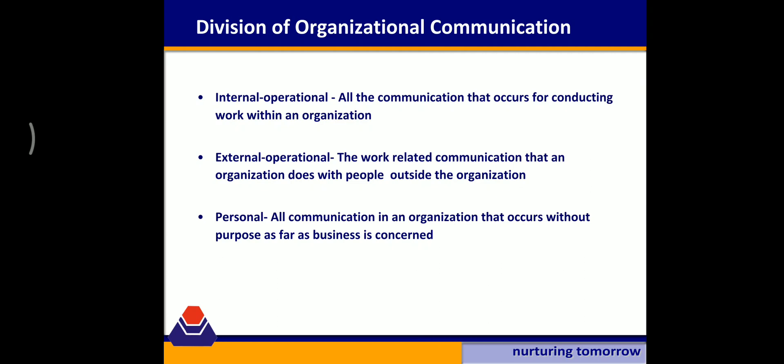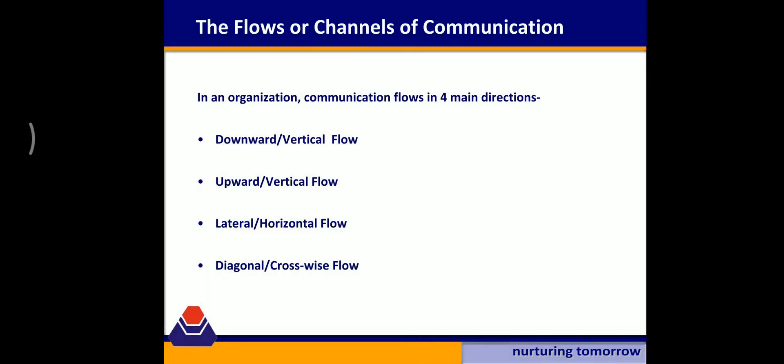External operational refers to communication that goes outside the organization — for example, when Company A communicates to Company B, whether it be a business proposal, a negotiation, or anything similar. The third is personal communication, which means whatever the employees are discussing that is not directly related to official purposes — it may sometimes be related to individual matters.